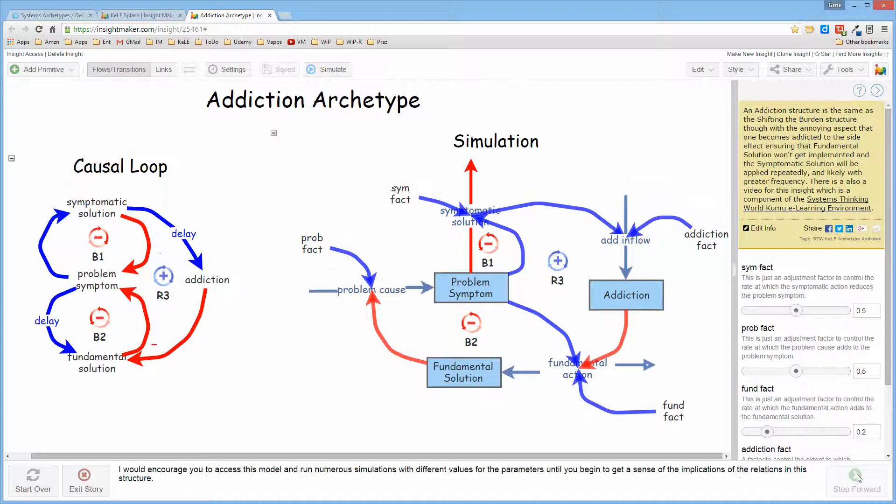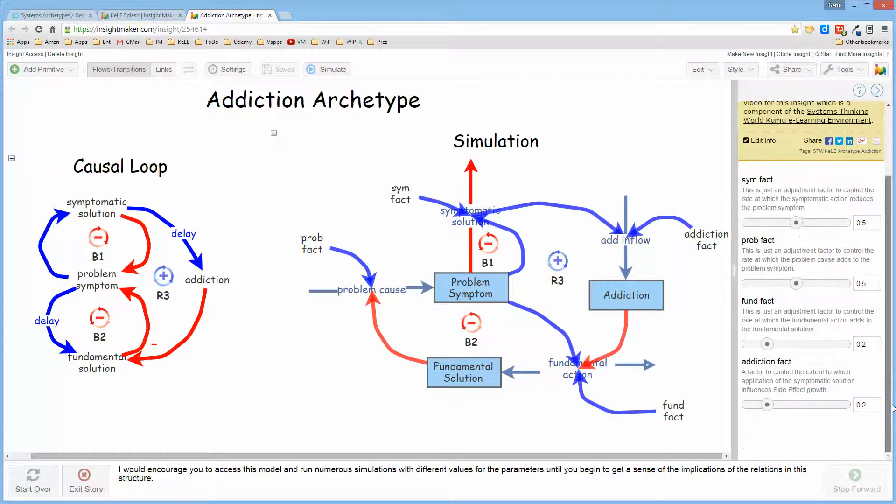And so I would encourage you to access this simulation model and alter the parameters here on the right and run the simulation repeatedly, changing these variables so that you get a sense of how the relationships interact and the implications of those relationships. Go ahead and turn off the addiction factor and the fundamental factor and look at just the balancing loop, and then add a piece and just continue to interact with it until you become comfortable with the structure.